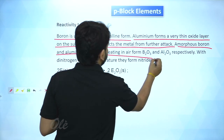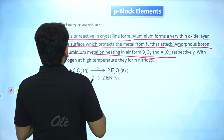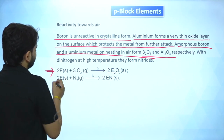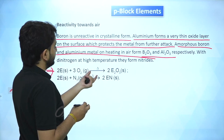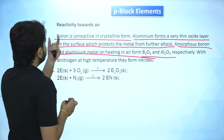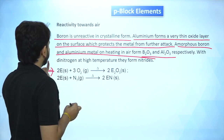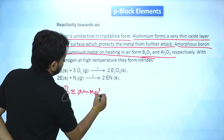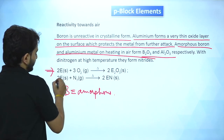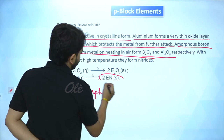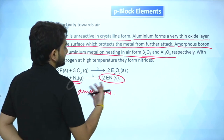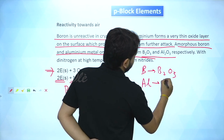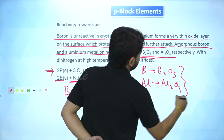Amorphous boron and aluminium metal on heating in air form B₂O₃ and Al₂O₃ respectively. With dinitrogen at high temperatures they form nitrides. These two reactions are important: boron must be in amorphous form (not crystalline) for the oxide reaction to occur. When reacting with N₂, nitrides are formed — so amorphous boron gives B₂O₃ with oxygen, and Al gives Al₂O₃.